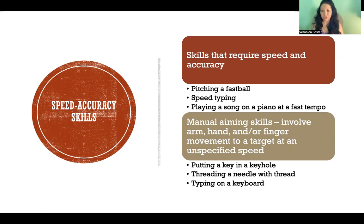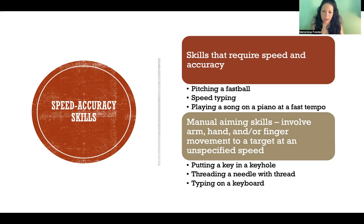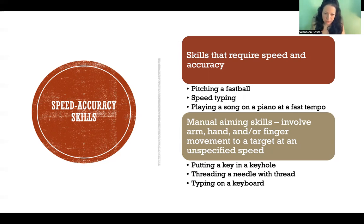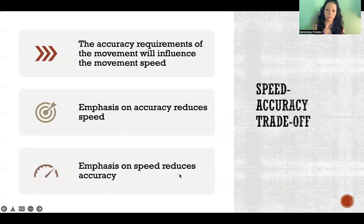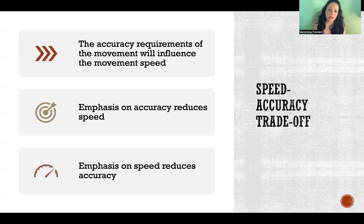Fitts Law describes the trade-off between those two qualities. We can only be so fast and maintain accuracy, and only so accurate and maintain speed. Manual aiming skills are an example of speed-accuracy skills — those that involve arm, hand, and/or finger movement to a target at an unspecified speed. Examples include putting a key into a keyhole, threading a needle, or typing on a keyboard. Accuracy is the priority, and then you go however slowly or quickly you need to be accurate. If we need to emphasize accuracy, we reduce speed; if we need to emphasize speed, we reduce accuracy.